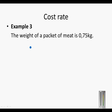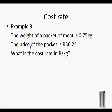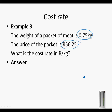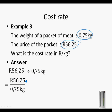Cost rate example 3: The weight of a packet of meat is 0.75 kilograms and the price is 56.25 Rand. What is the cost rate in Rand per kilogram? Remember, per means divide. So we take the amount in Rand and divide it by the weight in kilograms. We have 56.25 over 0.75, and the cost rate pops out: 56.25 divided by 0.75 equals 75 Rand per kilogram.